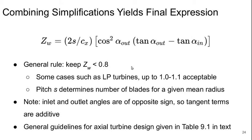So if we put all that together, we get an expression for the Zweifel coefficient. And even though the expression is Zweifel coefficient equals, we generally know the Zweifel coefficient, or we know what we want it to be. We generally want it to be as high as possible without being too high. So we want it to be around 0.8.